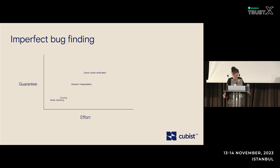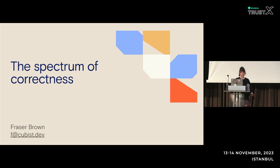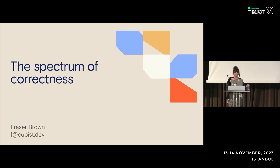I'll leave you with this little map of imperfect bug finding. There are all sorts of other kinds of strategies and they all fall somewhere on this guarantee-and-effort map, because building machines that verify other machines is, in the fully general case, impossible. So thank you — that was fun. Come ask questions later if you have them.